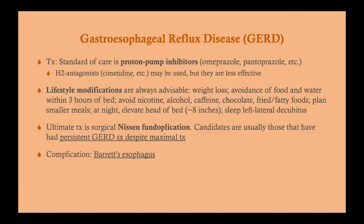Lifestyle modifications alone are not very helpful — always combine with proton pump inhibitors. The ultimate treatment for persistent reflux disease that fails maximal therapy — PPIs plus lifestyle modification — after ruling out Barrett's esophagus, cancer, and stricture on EGD, is surgical: the Nissen fundoplication. This involves wrapping the upper part of the stomach around the sphincter. Candidates are those with persistent reflux despite maximal treatment. More detail on this procedure is in the general surgery section.